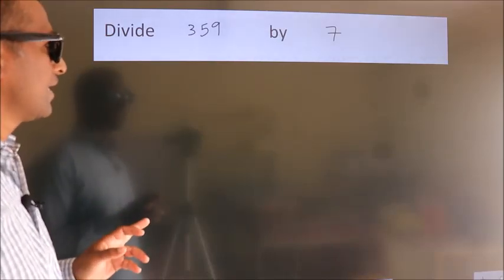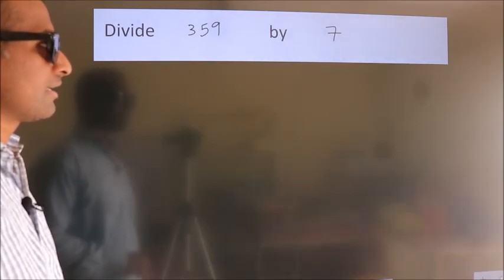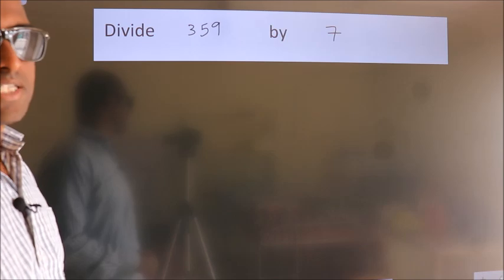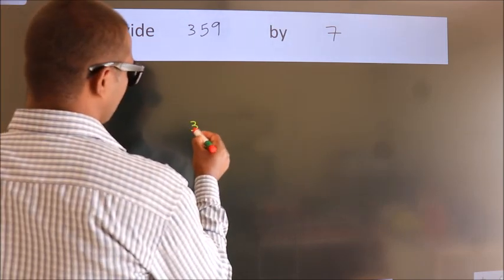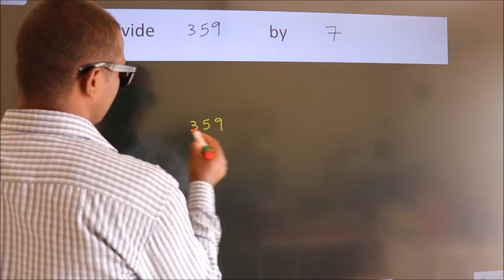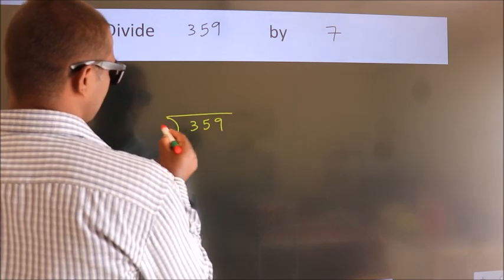Divide 359 by 7. To do this division, we should frame it in this way: 359 here and 7 here.